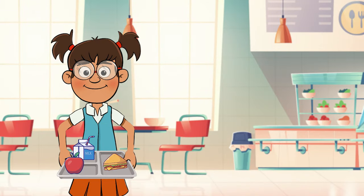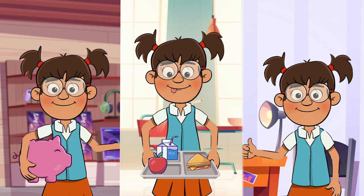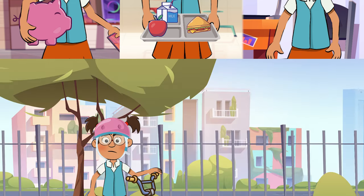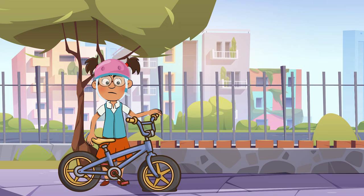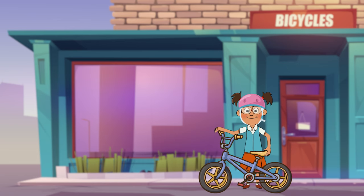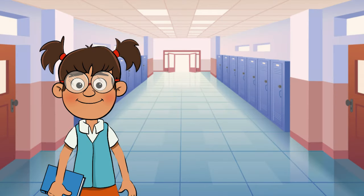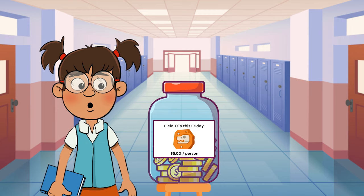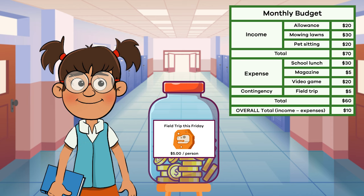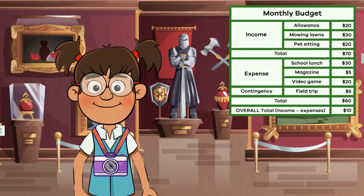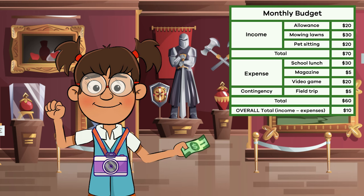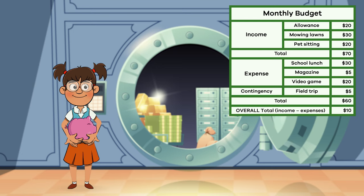It is awesome that Frankie has enough money to pay for her needs — school lunch — and her wants — magazine subscription and video game. But it is important to remember that income and expenses are often estimated; sometimes unexpected expenses happen. So you have to make sure your budget is flexible and that you save for contingencies, which are unforeseen changes. Frankie finds out she has to contribute $5 to her school to go on a field trip to the museum. Luckily, this contingency did not exceed her budget, so she is able to go — and she still has $10 to spare to put into her savings account. Now that is some effective budgeting — way to go, Frankie!